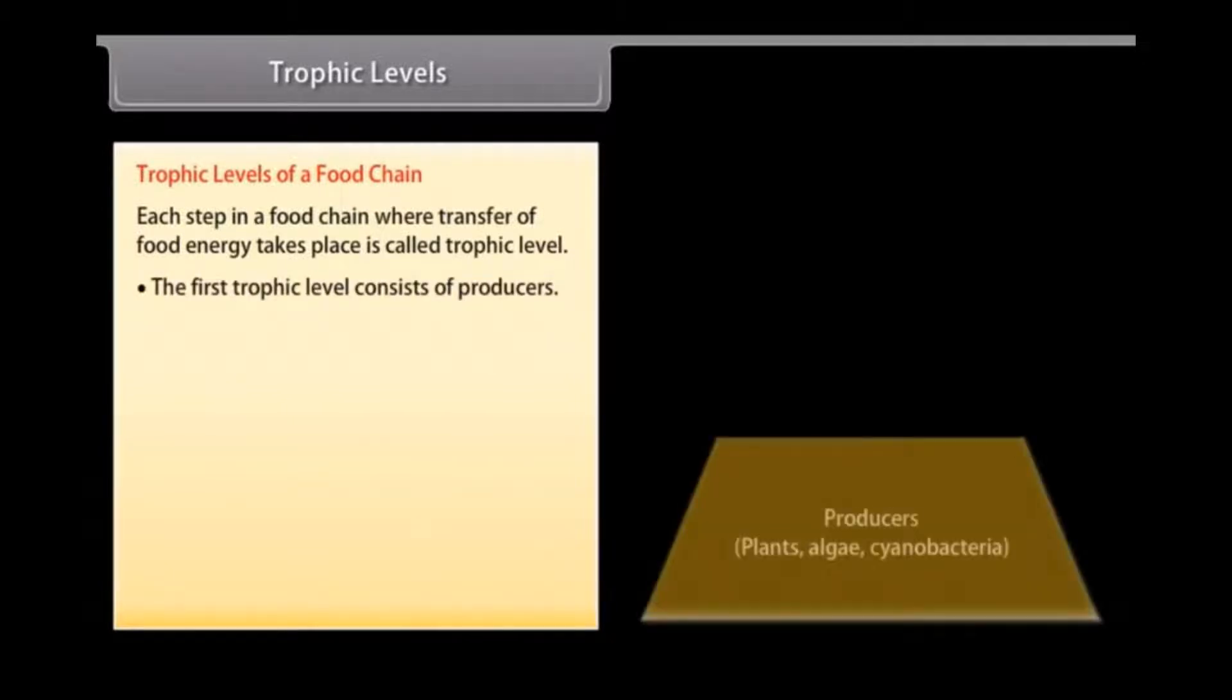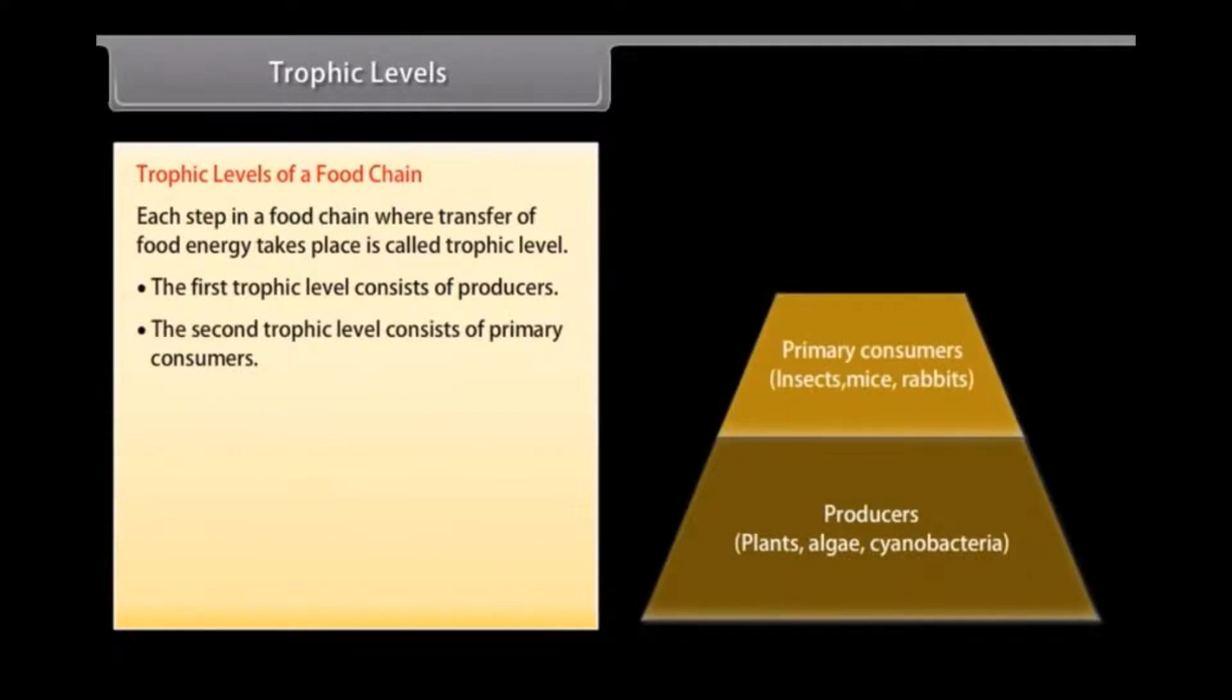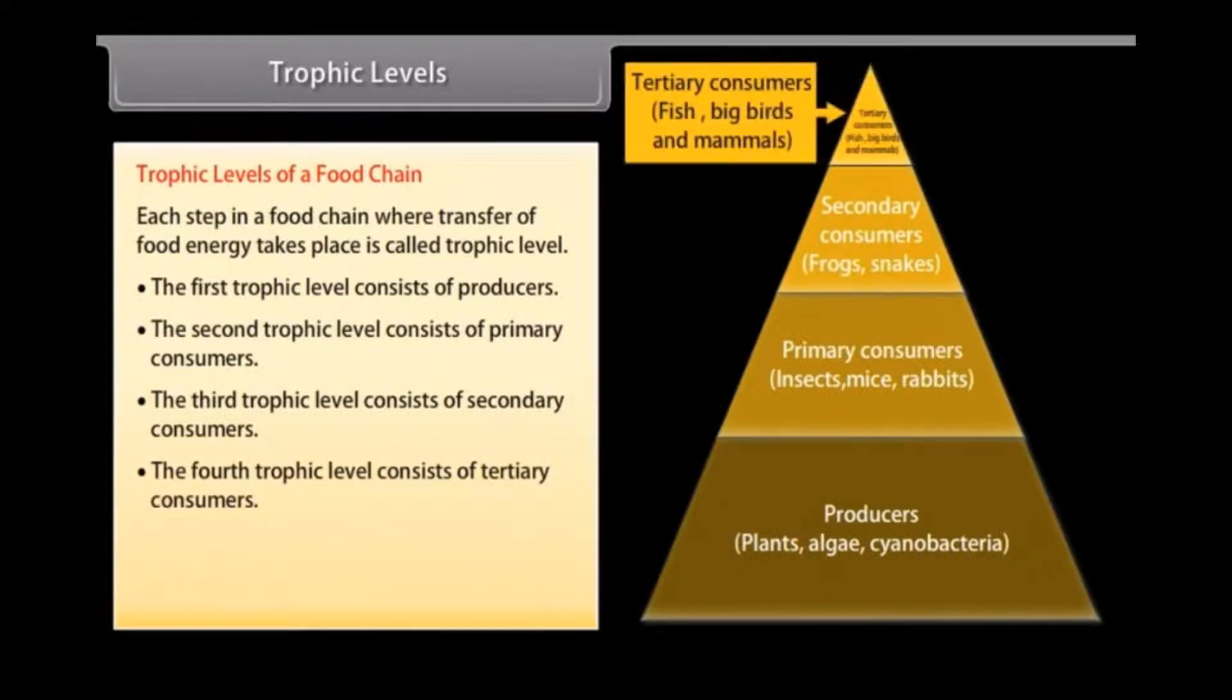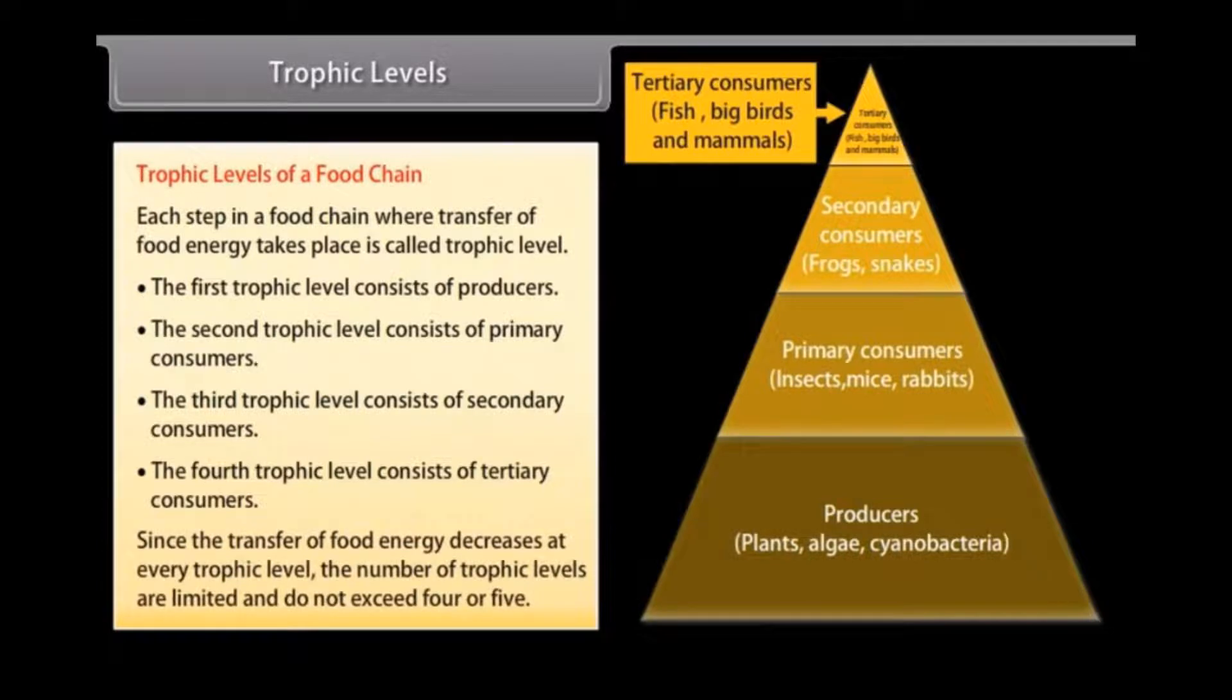Trophic Level. Each step in a food chain where transfer of food energy takes place is called trophic level. The first trophic level consists of producers. The second trophic level consists of primary consumers. The third trophic level consists of secondary consumers. The fourth trophic level consists of tertiary consumers. Since the transfer of food energy decreases at every trophic level, the number of trophic levels are limited and do not exceed 4 or 5.